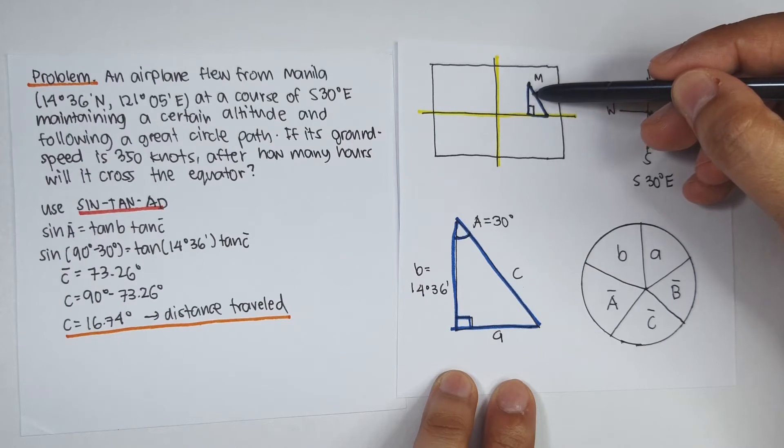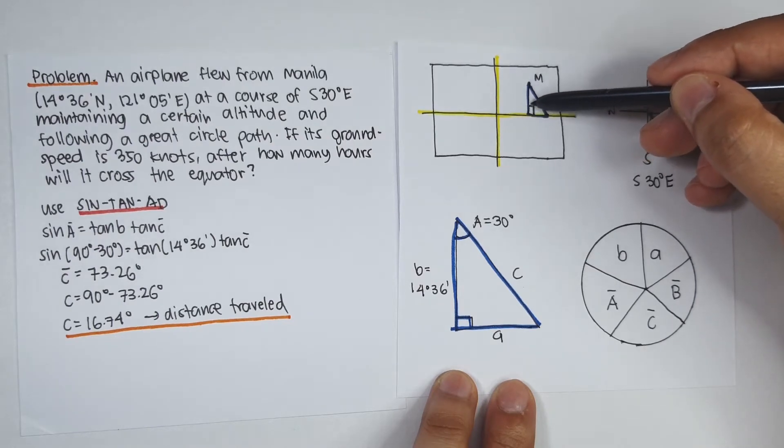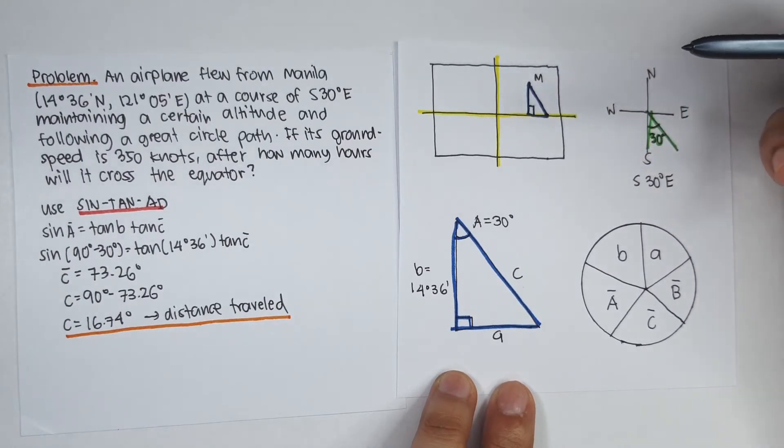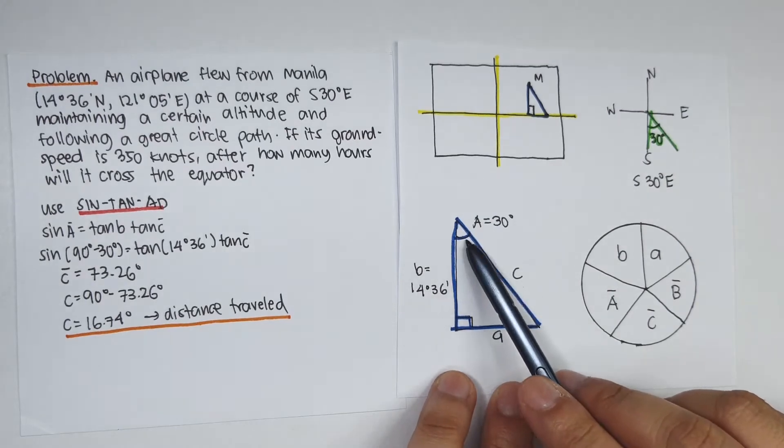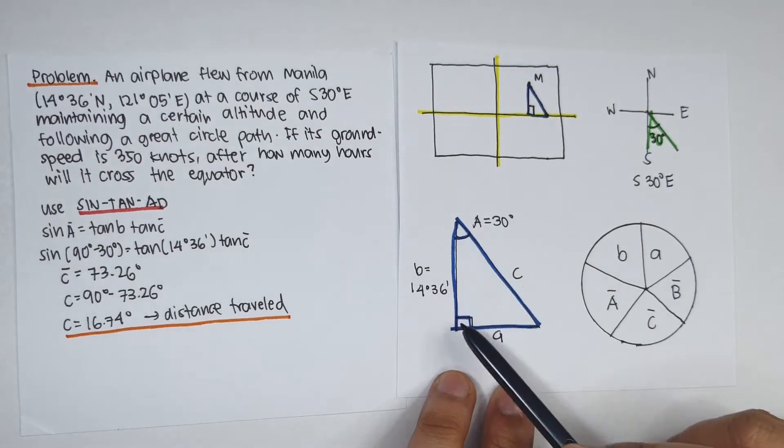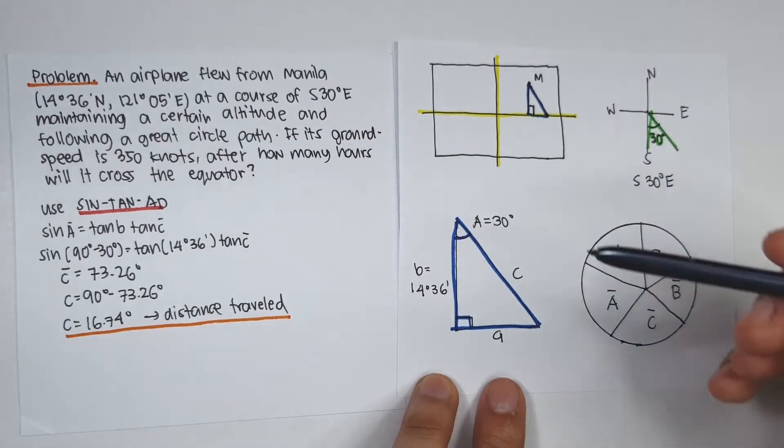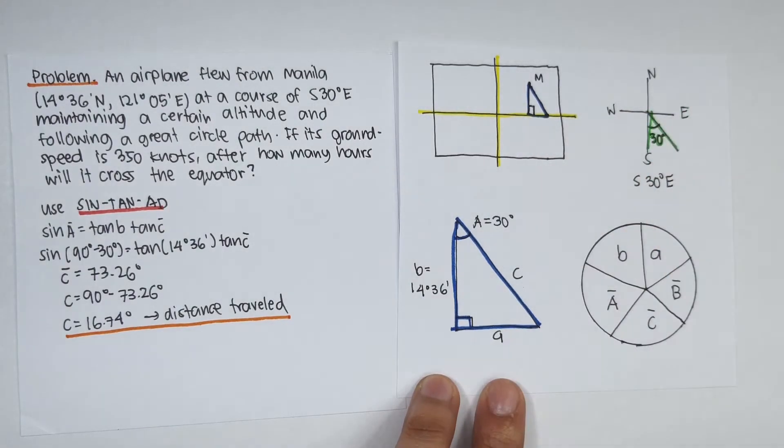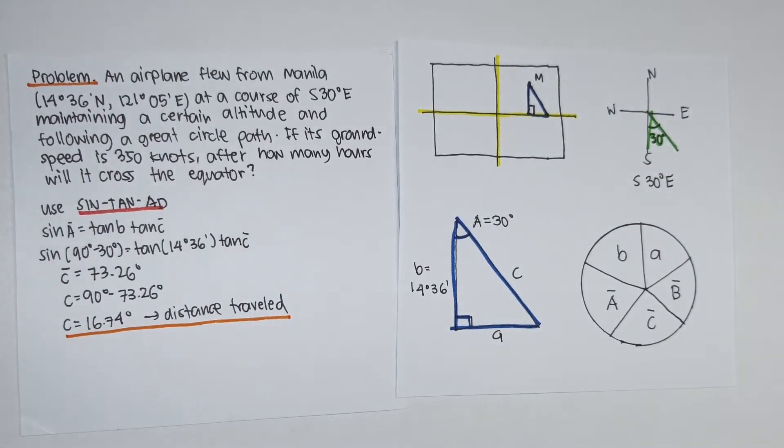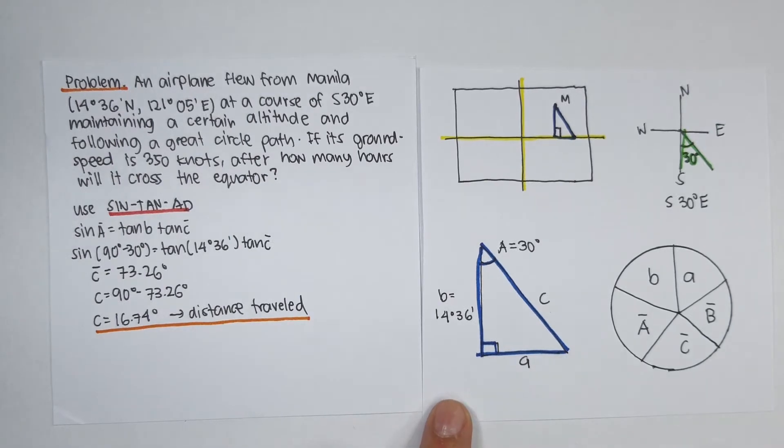Where this is 30 degrees, and this is 14 degrees 36 minutes. Say for example, this is angle A, this is side B, and side A. What we need to get is the value of side C, which is the distance traveled by the airplane. And since this is a right spherical triangle, we can use Naper's rule.